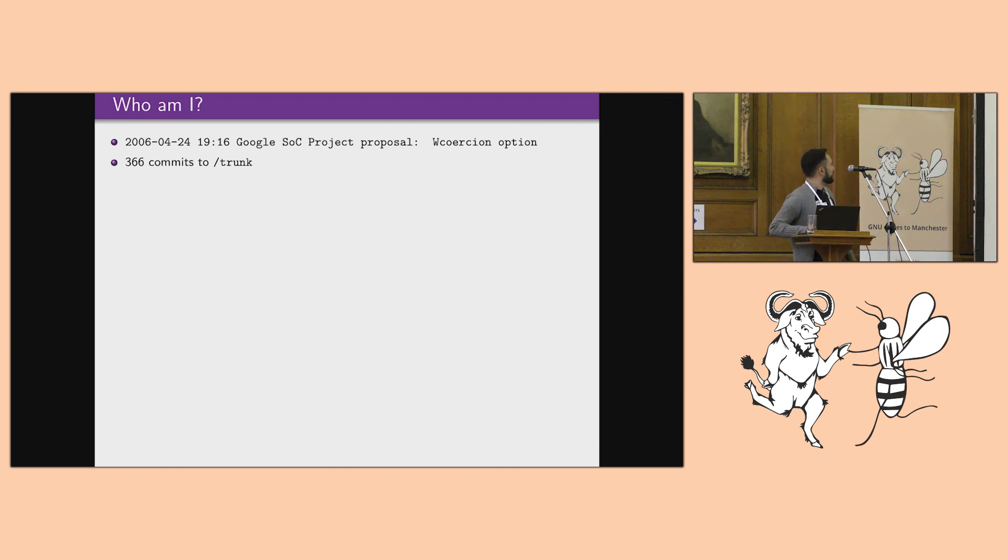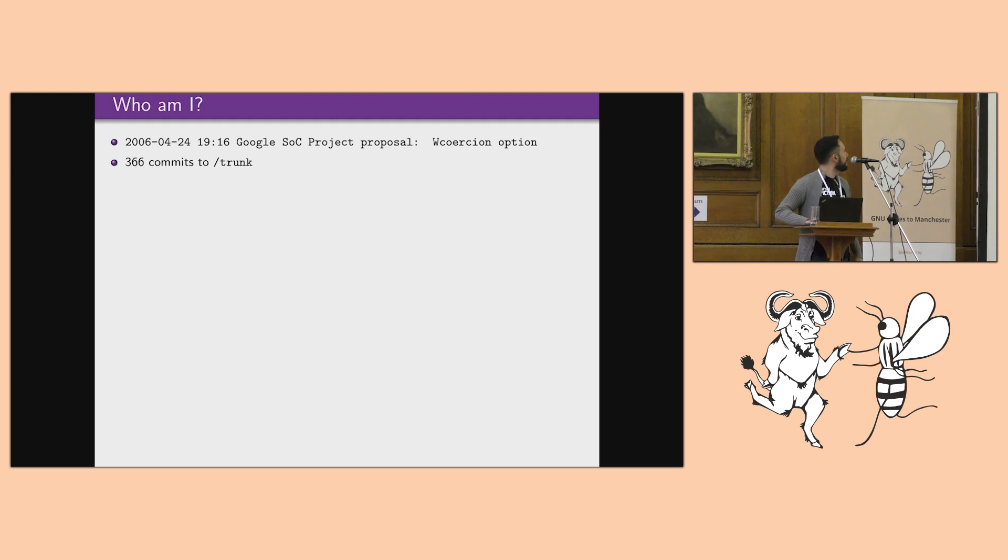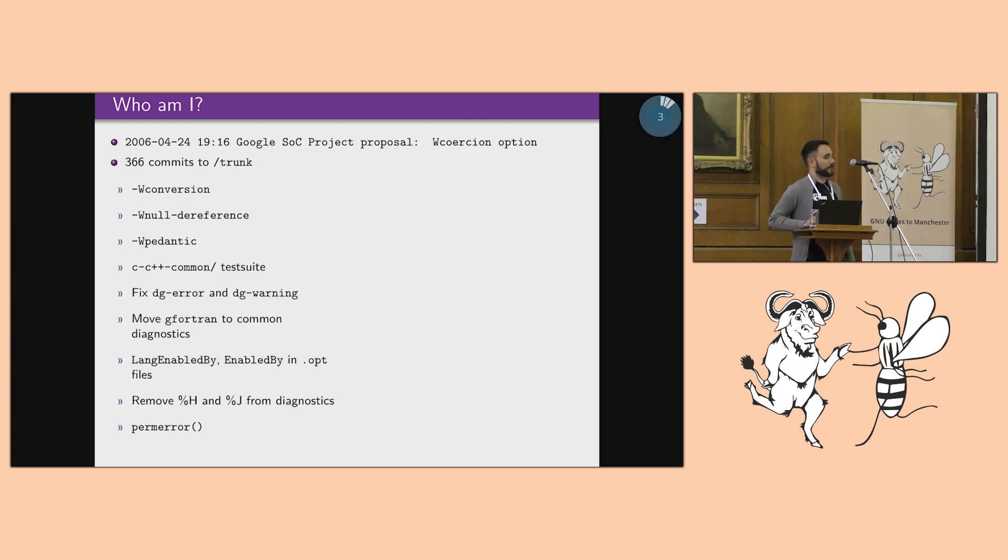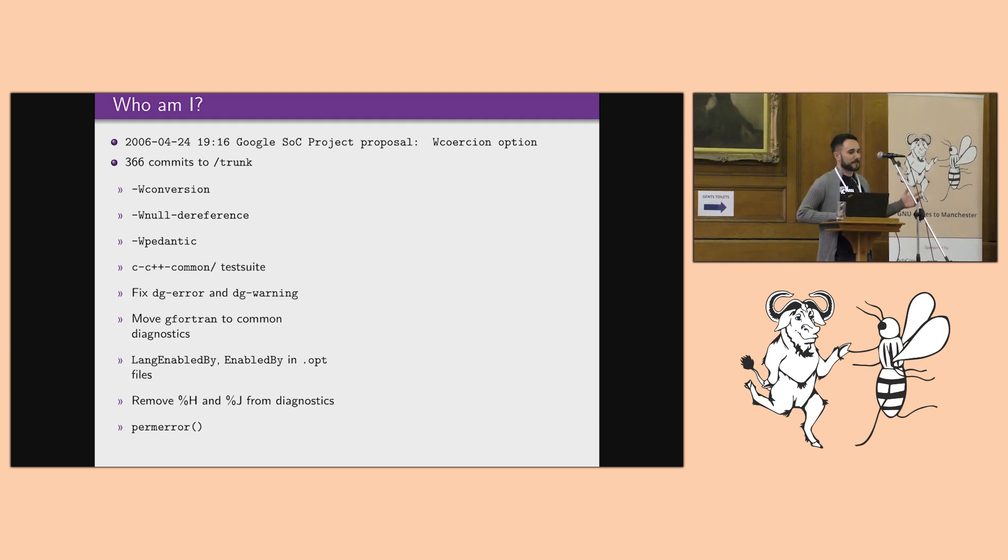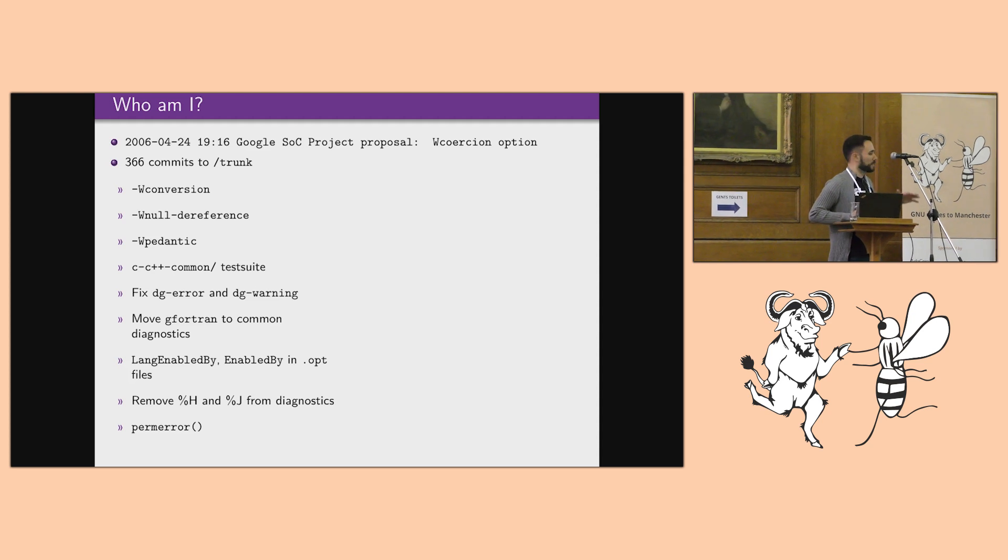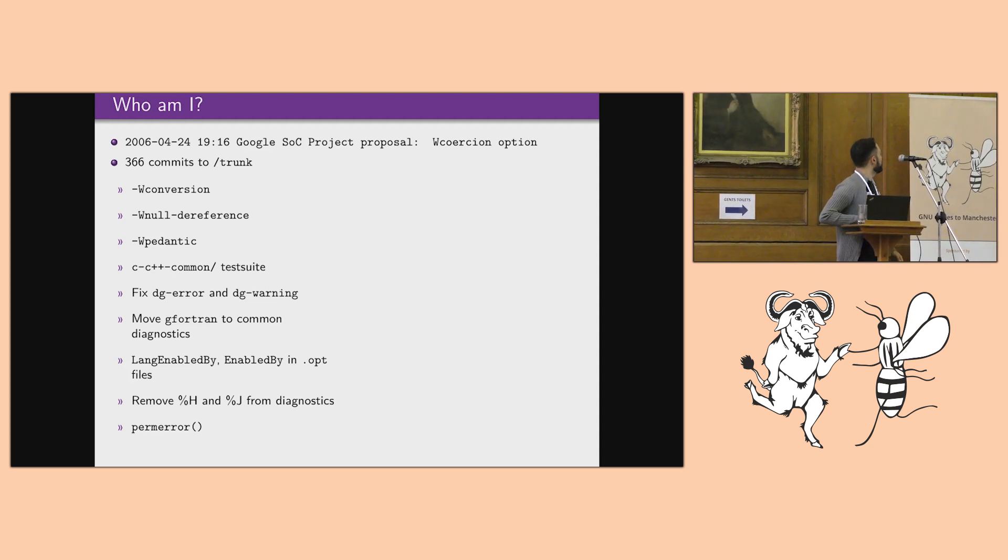I first contributed to GCC in 2006 when I joined Google. I proposed a Google Summer of Code project and since then I have done 366 commits to trunk, which maybe doesn't sound like a lot, but there were a few interesting things left, like for example the W conversion option, the idea and implementation of having an integrated C++ common test suite, because maybe you remember when we used to duplicate all the test cases.